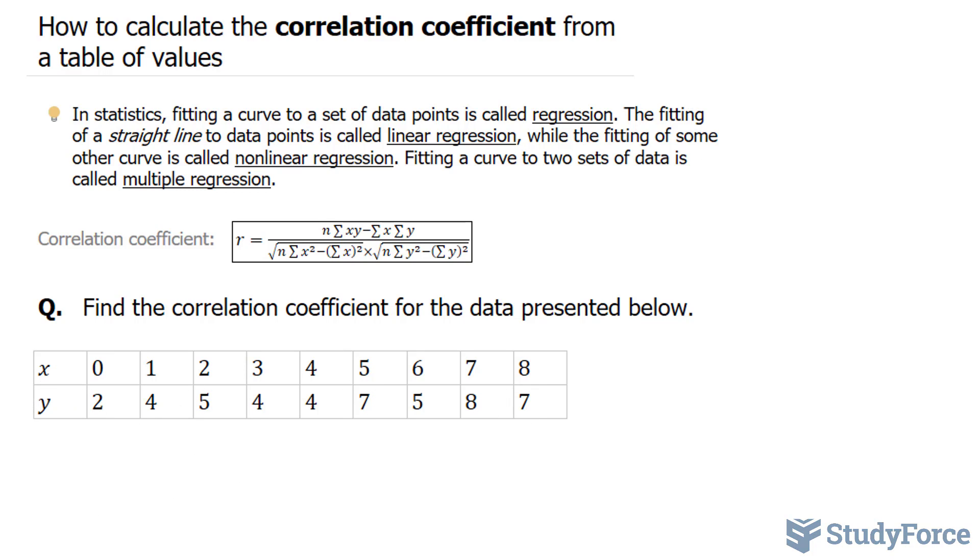In the third column, you'll multiply your x times your y for that point. In your fourth column, you'll have the x variable squared, and in the fifth column, the y variable squared.